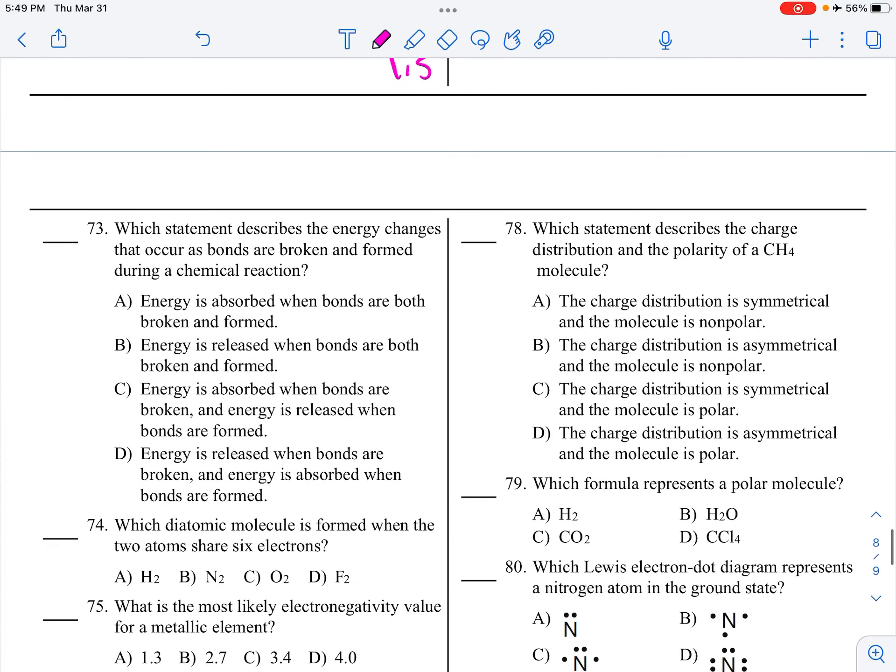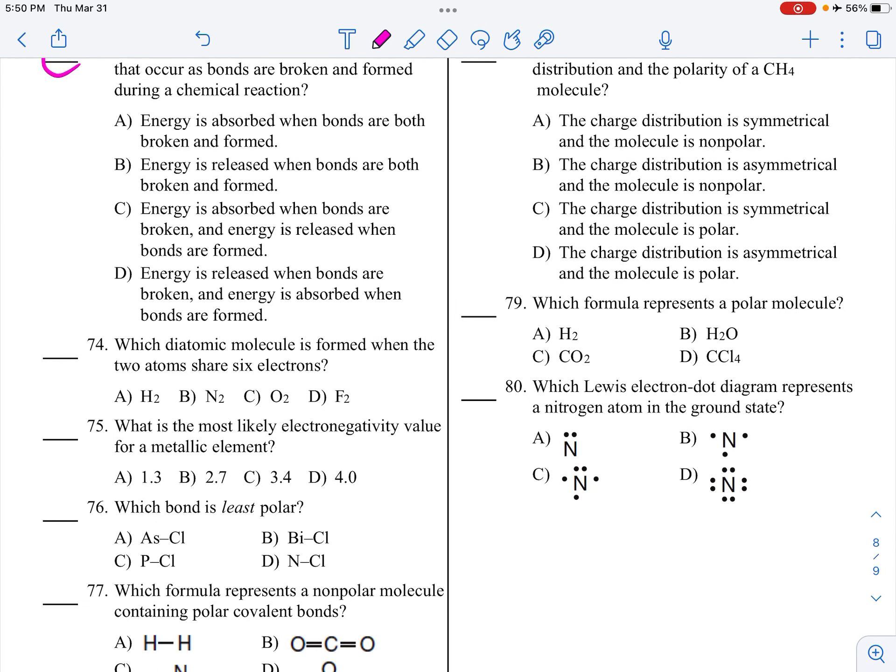Which describes the energy changes that occur as bonds are broken and formed? When you break a bond, you disrupt that octet, which makes everything upset. So you're going to have to take energy in, and when you form a bond, energy is released. We've got to find that energy is absorbed when bonds are broken, and energy is released when bonds are formed. Which diatomic molecule is formed when the two atoms share six electrons? That's a triple bond. Who forms that triple bond? That's nitrogen.